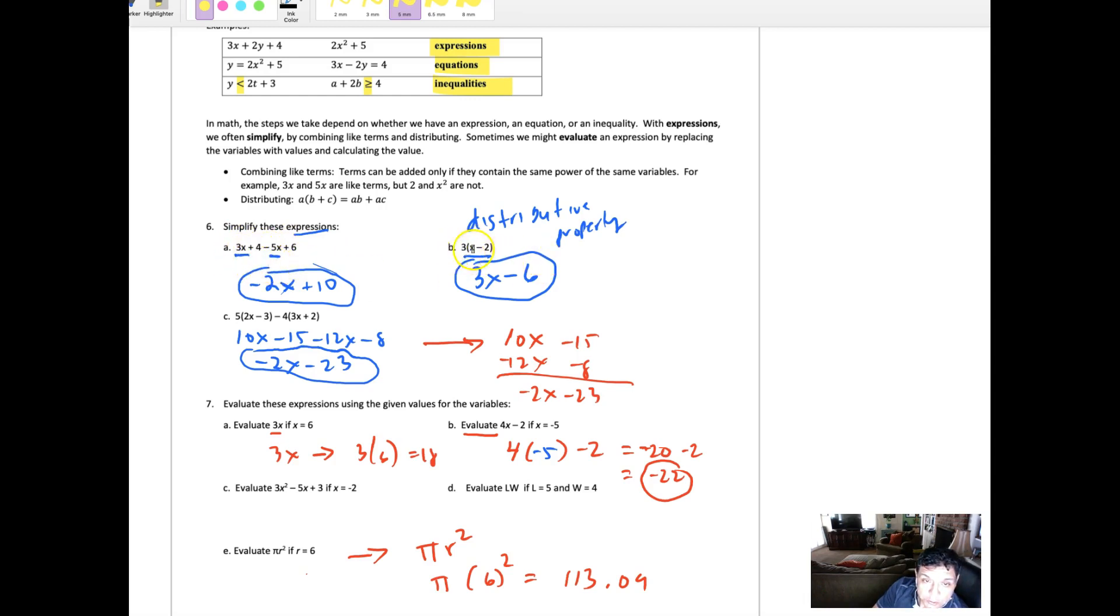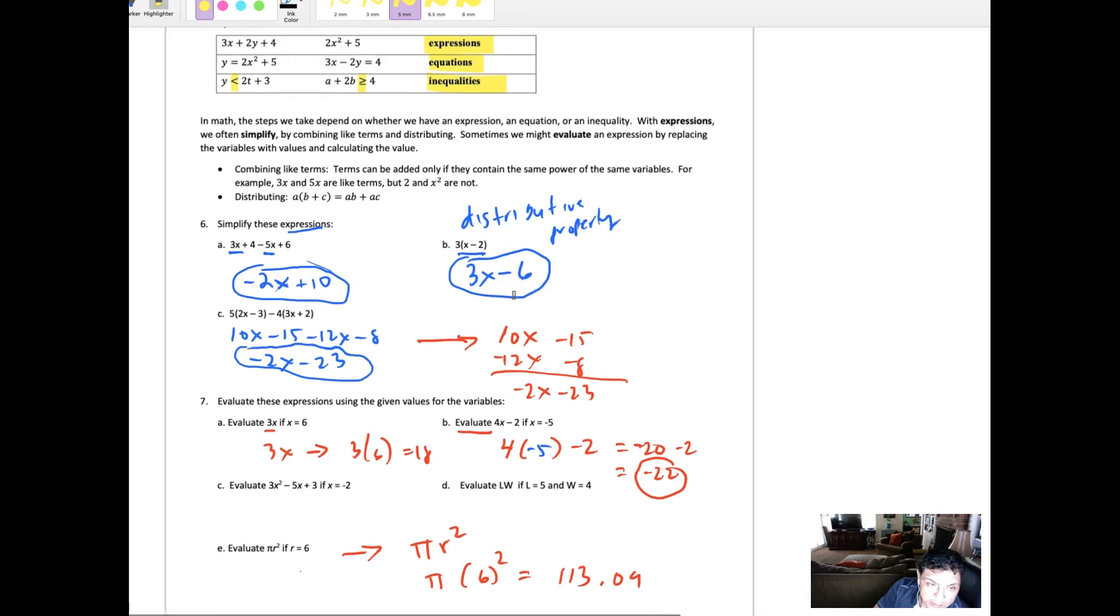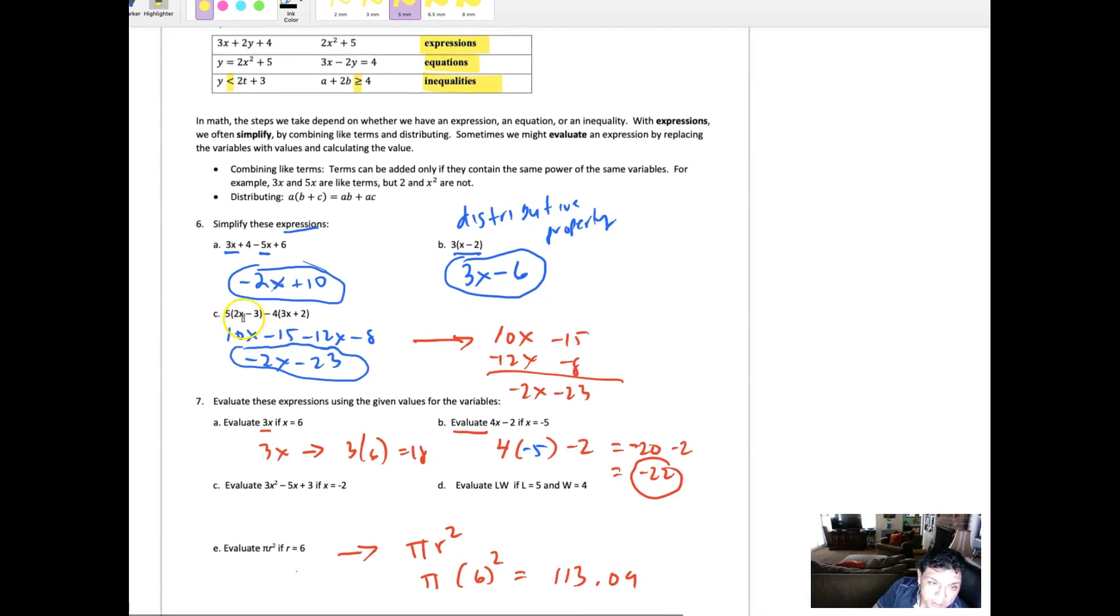Here we use distributive property. You multiply the outside number with everything inside the parentheses and you can see what we get here.